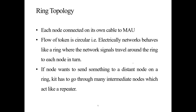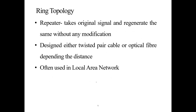In ring topology, signals travel around the ring to each node in turn. If a node wants to send something to a distant node on a ring, it has to go through many intermediate nodes, which act like repeaters. A repeater is basically a networking device that takes the original signal and regenerates the same signal without any modification.